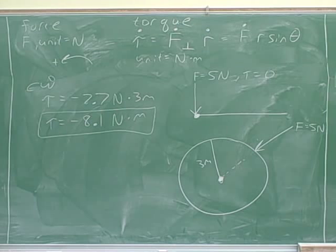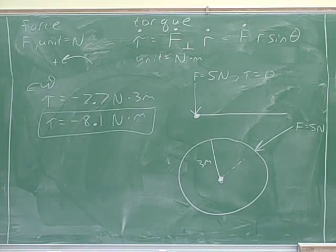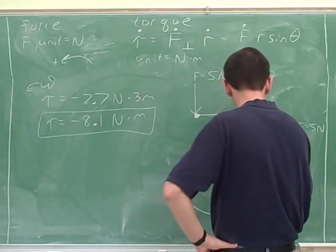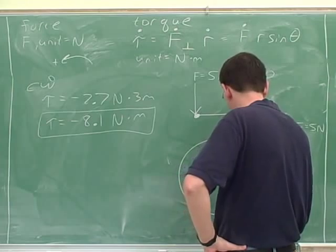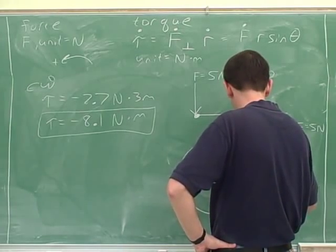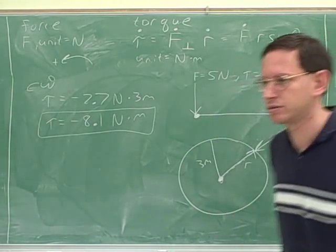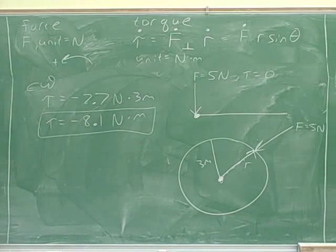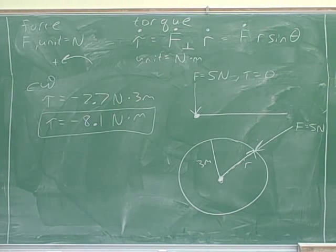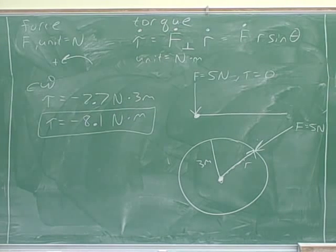Now step 3 — you draw R from the pivot. So here's our R vector. Now we're ready for step 4: draw F perpendicular and determine its magnitude. So what happens when we do that?